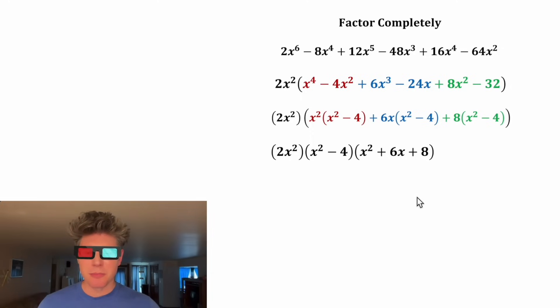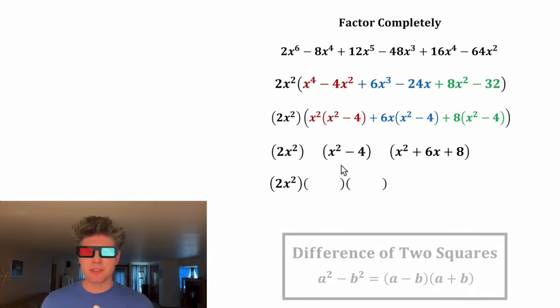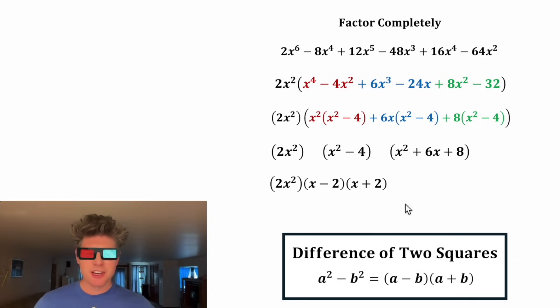Now to finish, both of these are pretty standard factoring. Let's copy down the GCF. The x squared minus four is a difference of two squares. It'll be x minus two times x plus two. Here's the notes right here.